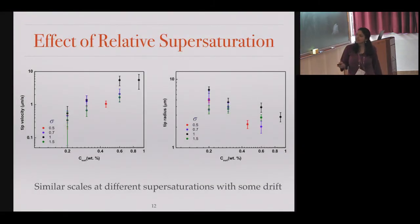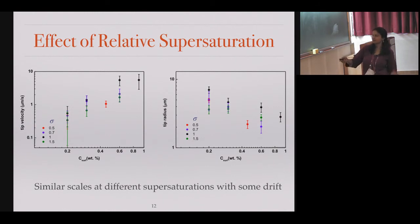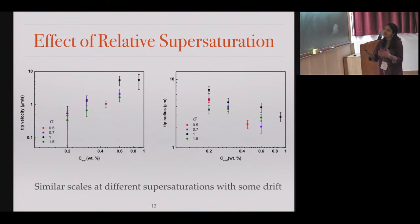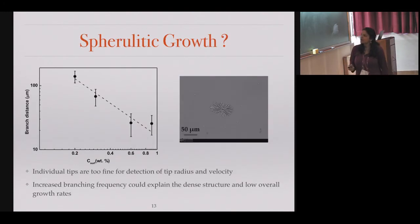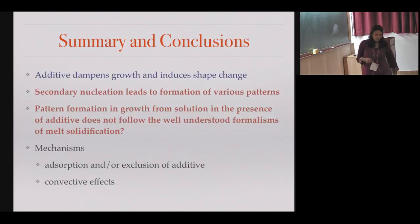If we do this for different levels of stearic acid — where sigma is the level of supersaturation, defined as concentration divided by solubility minus one — we still get a similar scaling for different sigmas. Likewise for tip radius versus surfactant concentration at different sigmas, indicating there is some universality to these results. There is also something interesting happening with the frequency at which the branches are splitting: branch splitting distance versus surfactant concentration also shows a power law.